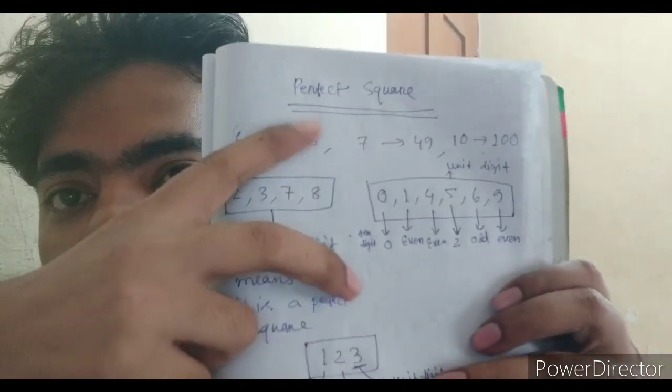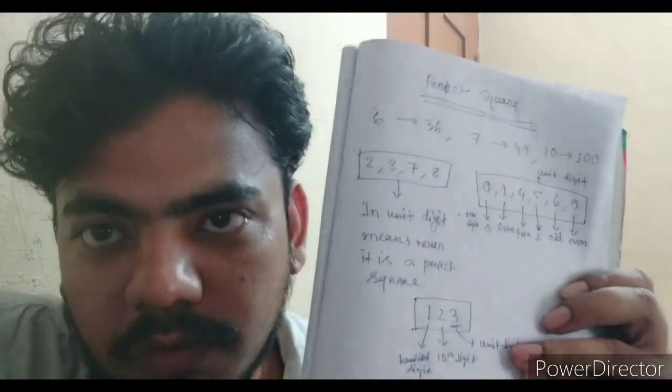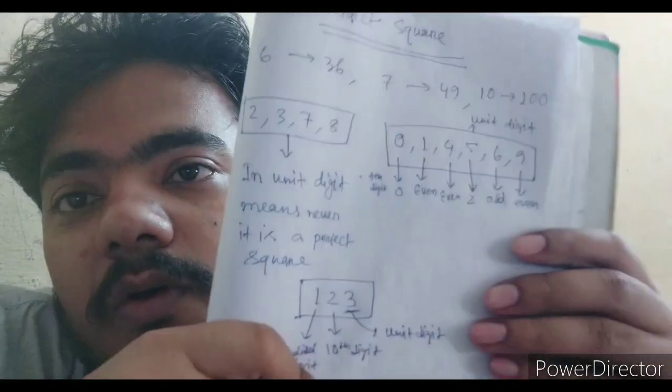The next question type is perfect squares. What is a perfect square? The square of 6 is 36, 7 is 49, 10 is 100 — so 100 is a perfect square. They will give you a number like 123 or a longer one — they won't give three digits easily, they will give five to six digits to confuse you. You have to tell whether it is a perfect square or not. There is a trick — if you know it, it takes only 5 to 10 seconds.